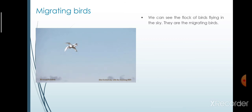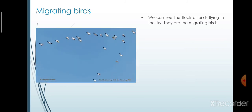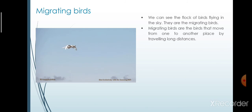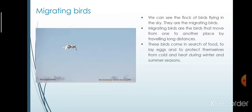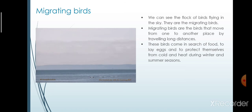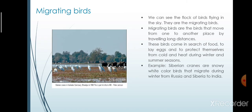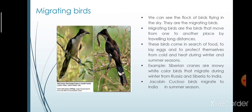Next, we will see what are migrating birds. We can see the flock of birds flying in the sky — they are the migrating birds. Migrating birds are the birds that move from one place to another place by travelling long distances. These birds come in search of food, to lay eggs, and to protect themselves from cold and heat during winter and summer seasons. For example, Siberian cranes are snowy white-coloured birds that migrate during winter from Russia and Siberia to India. Jacobin cuckoo birds migrate to India in the summer season.